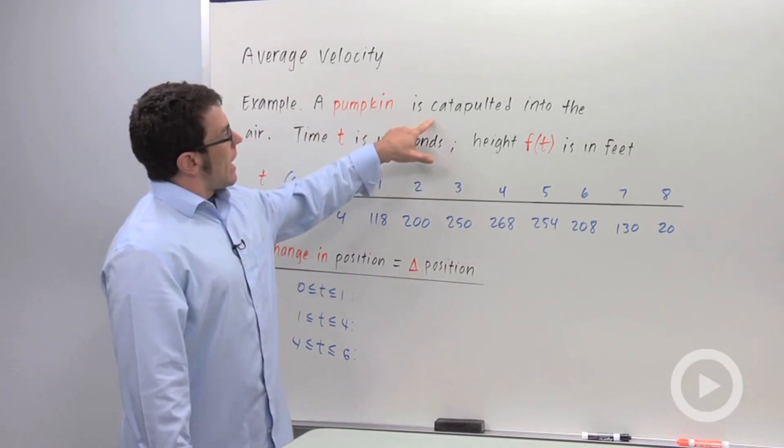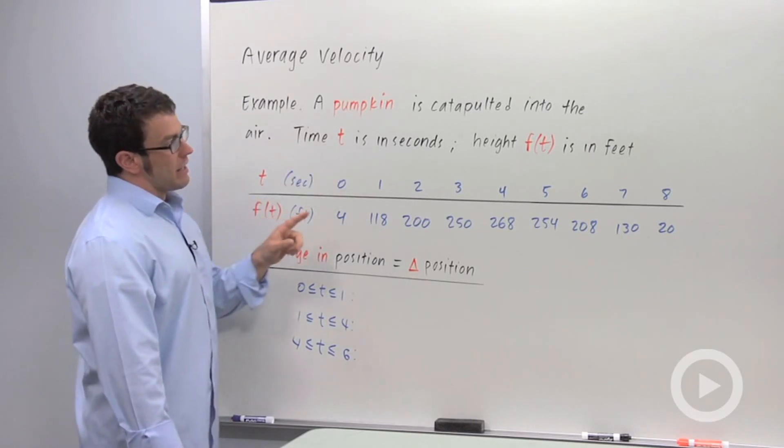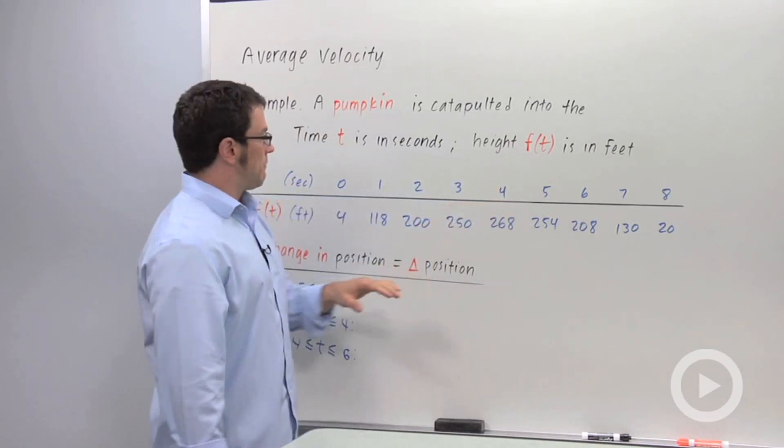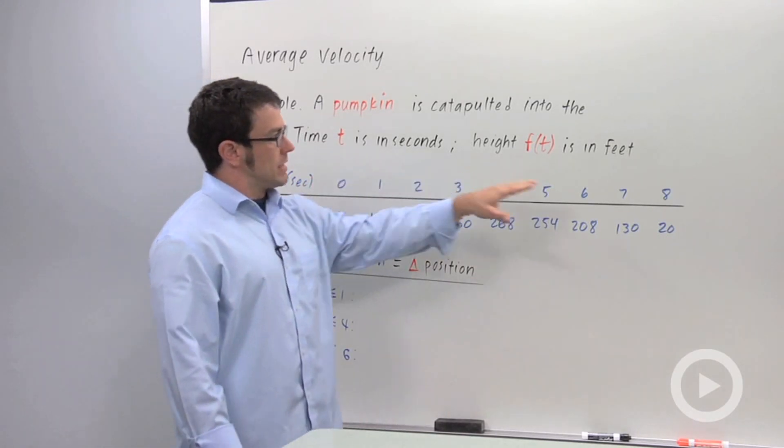A pumpkin is catapulted into the air. Time t is in seconds, and the height of the pumpkin, f of t, is in feet. It's given by values on this table. I've got values for t equals 0 to 8.